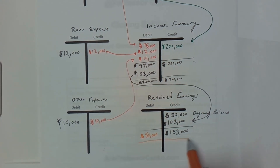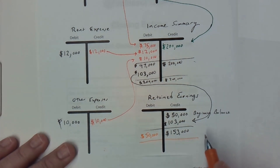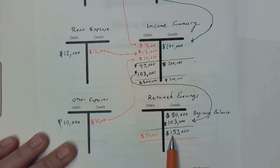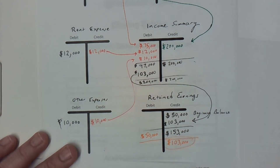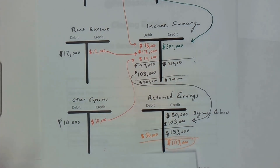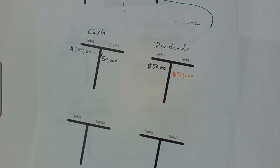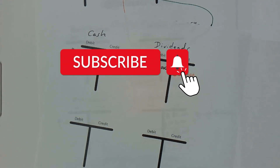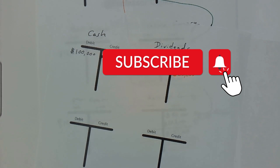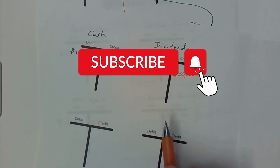That means our new retained earnings balance: we have debits of $50,000 and credits of $153,000, so our new retained earnings balance is $103,000. You have now properly closed out your temporary accounts for the year. There's much more you need to know, so go ahead and subscribe to my channel and hit that notification bell so you never miss a video. Thank you.